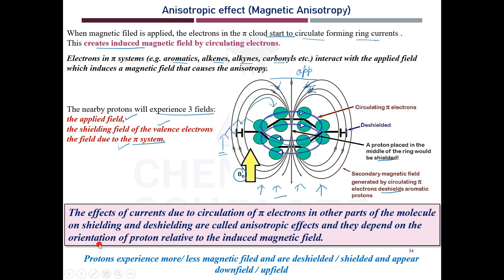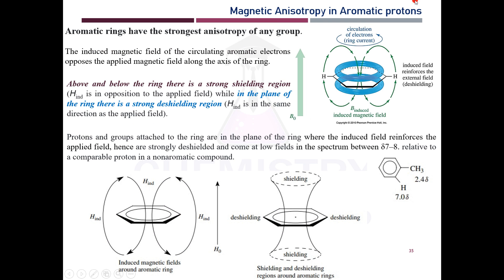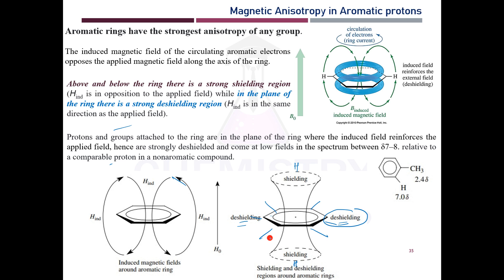Depending upon the position of the proton in the pi system, your proton can appear either upfield or downfield. This is called the anisotropic effect — the effects of currents due to circulation of pi electrons on shielding and deshielding depend on the orientation of the proton relative to the induced magnetic field. For aromatic protons this shows the strongest anisotropy effect. Any protons lying in the plane of the benzene ring come under the deshielding region, while protons lying above or below the plane come under the shielding region.